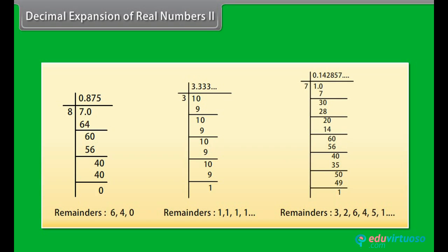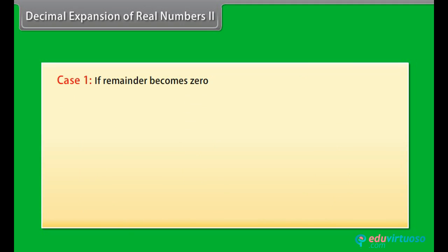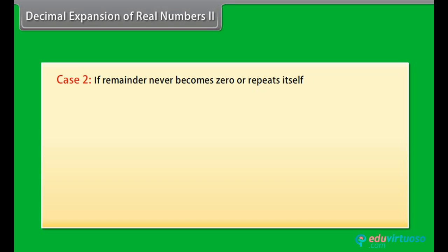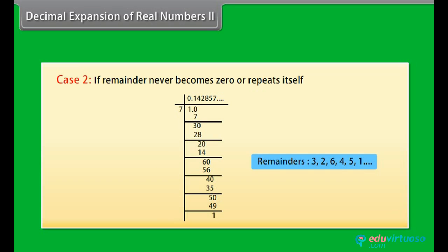Notice that in all these examples, the remainders either become 0 after a certain stage or start repeating themselves. Case 1: if the remainder becomes 0, then the decimal expansion ends after a finite number of steps. The decimal expansion of such numbers is terminating. Case 2: if the remainder never becomes 0 but repeats itself, then the decimal expansion of such numbers is non-terminating recurring.